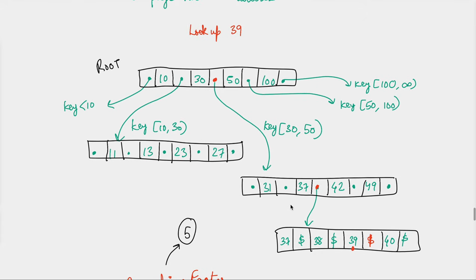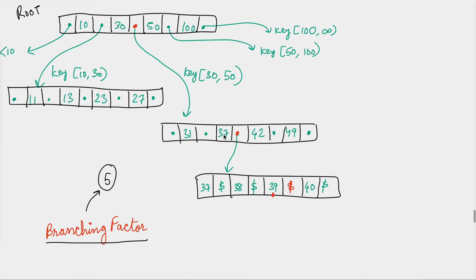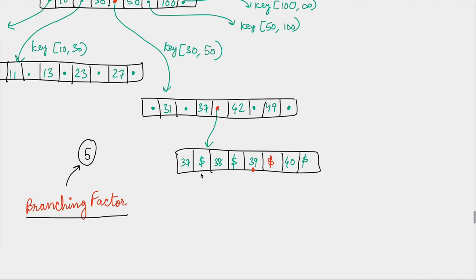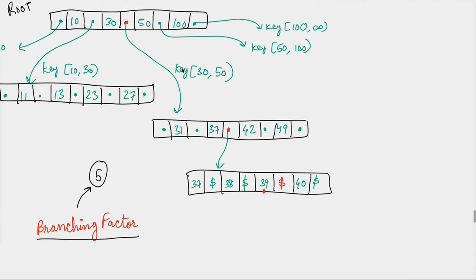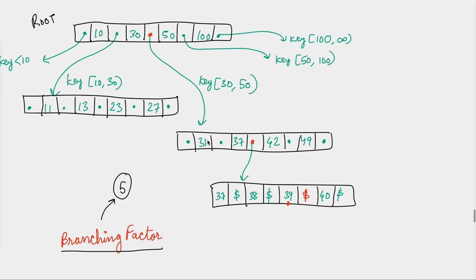If you want to perform a lookup for key 39, you go to the root node and determine that 39 resides between 30 and 50, so you follow that particular pointer and access a new page — read from the hard disk. You perform another disk I/O operation, read the page, and see that 39 resides between 37 and 42, so you traverse one more page from the disk. In this fashion you keep doing hops based on what range the lookup key lies in.